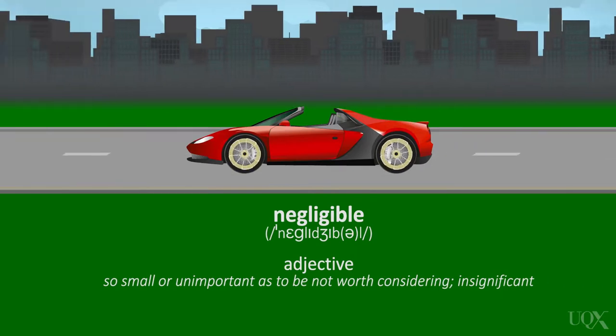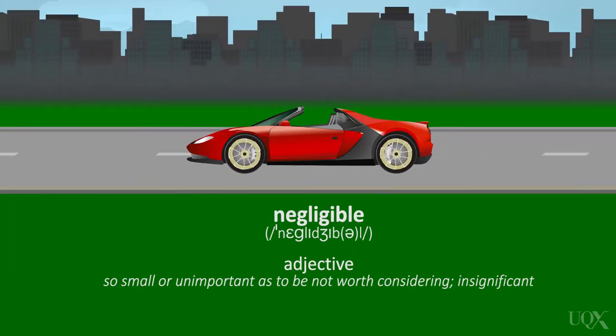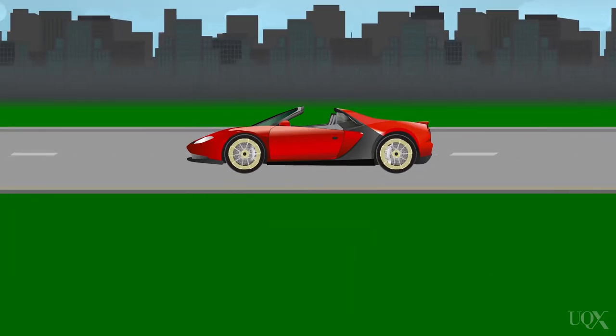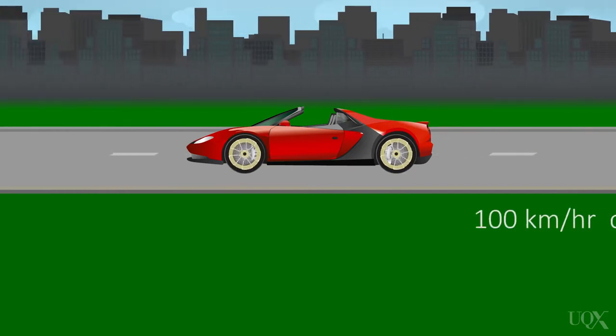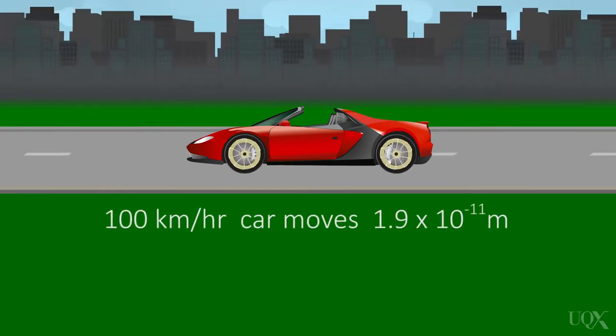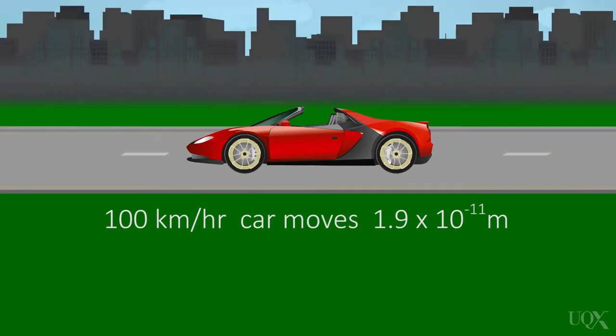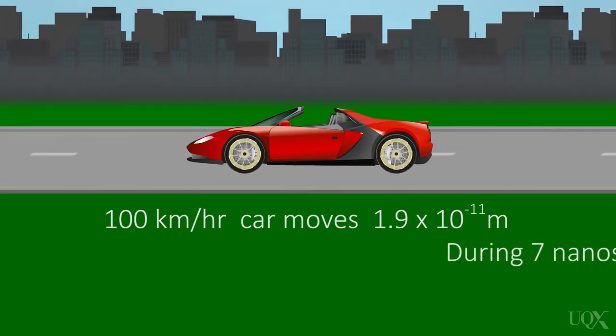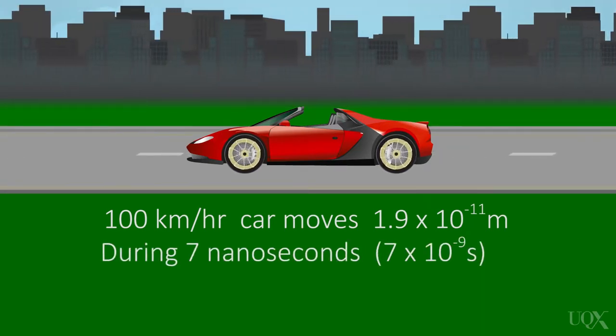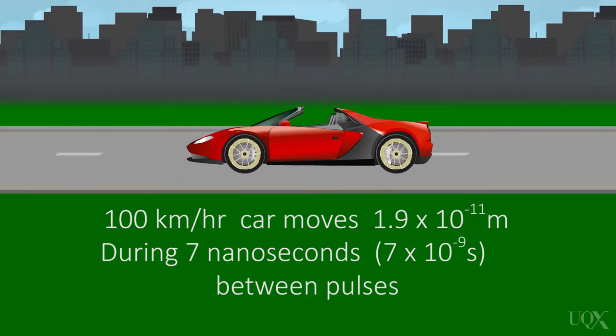To provide a numerical example of the distances involved in these measurements, consider the following situation. At 100 kilometers per hour, the car moves only 1.9 times 10 to the minus 11 meters during the 7 nanoseconds between pulses from the LIDAR unit. Indeed, this is a very small distance, which introduces negligible errors into the speed measurement when you are fined for exceeding the speed limit.